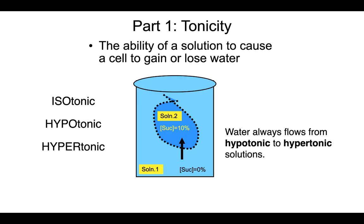Let's talk about the first part. In order to understand what the tonicity of Kool-Aid is relative to a 10% sucrose solution, we need to understand what tonicity is. Tonicity is the ability of a solution to cause a cell to either gain or lose water. In this particular experiment, the cell we will be using is a dialysis tubing that has been tied at two ends and filled with a 10% sucrose solution.